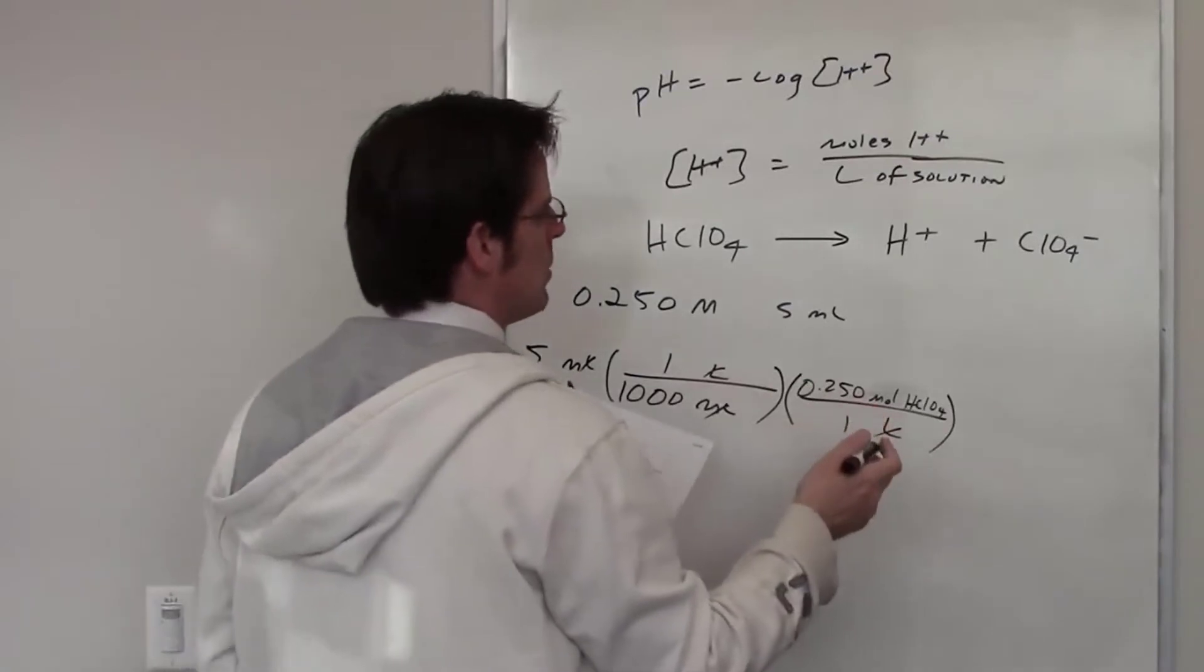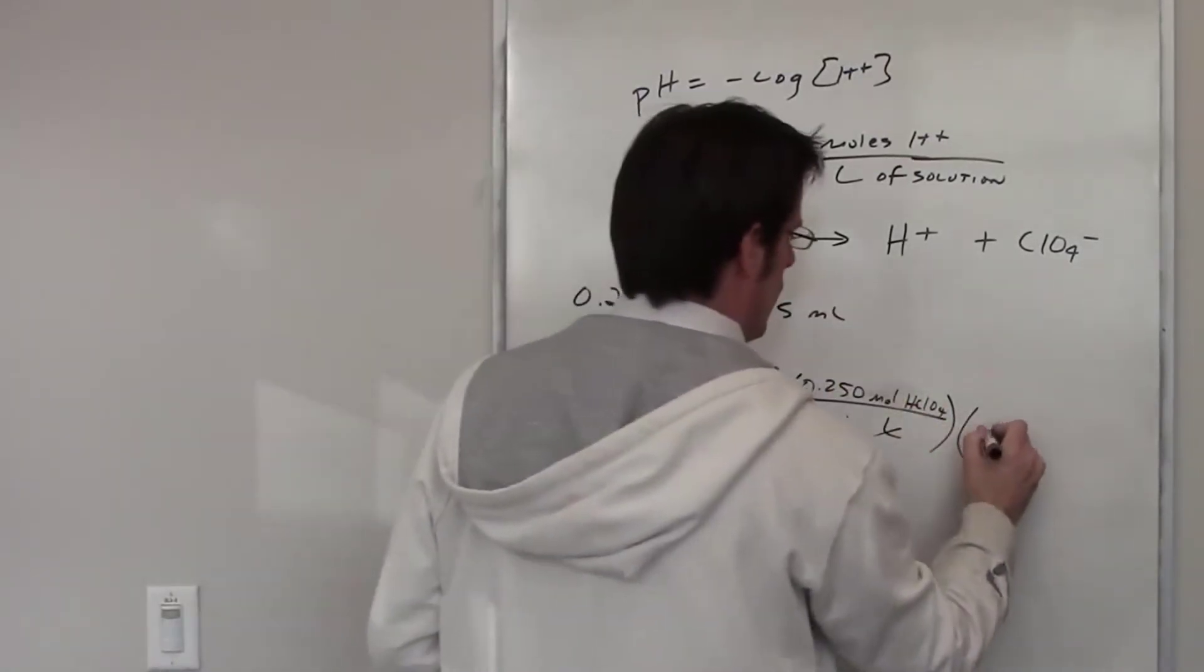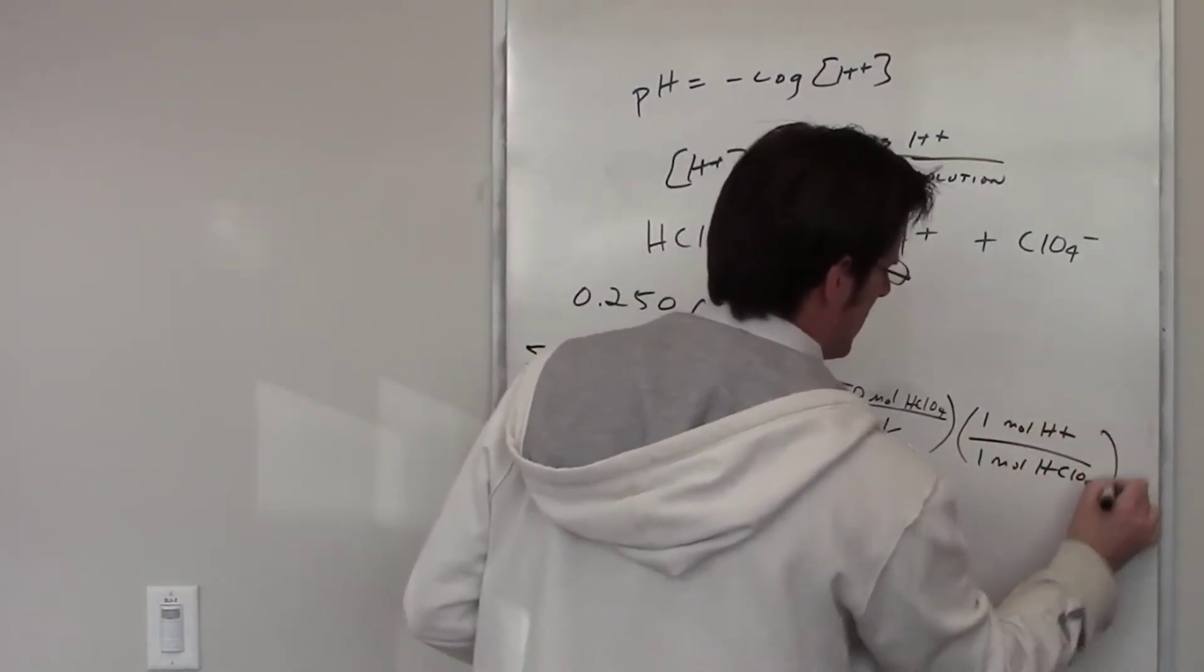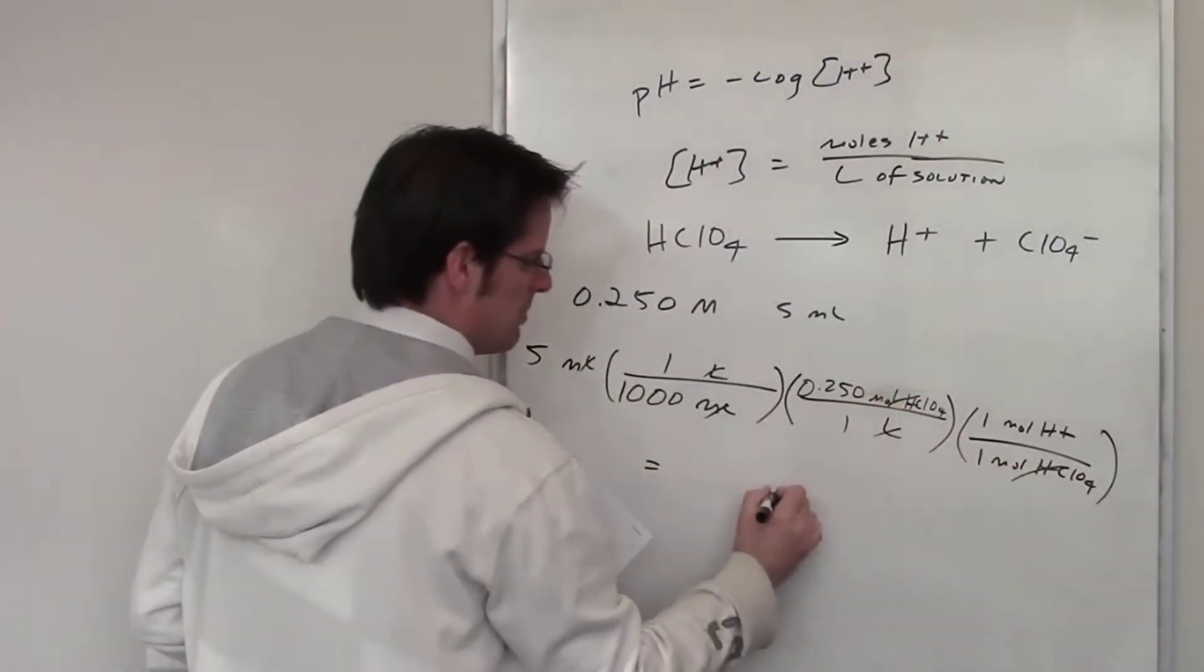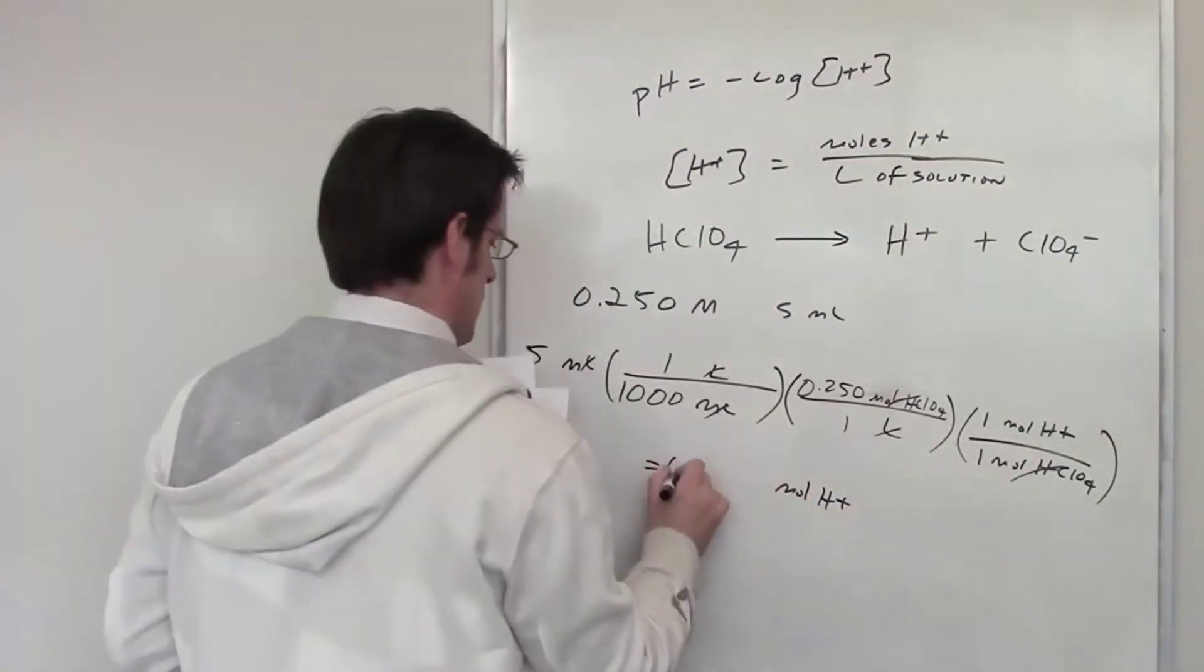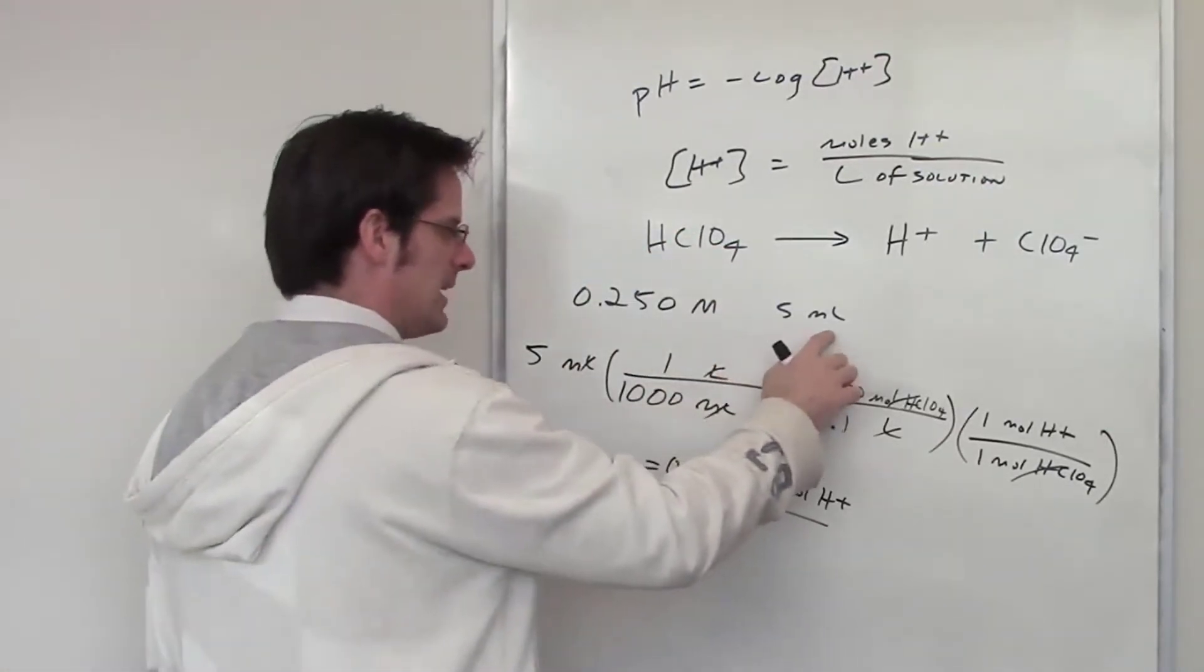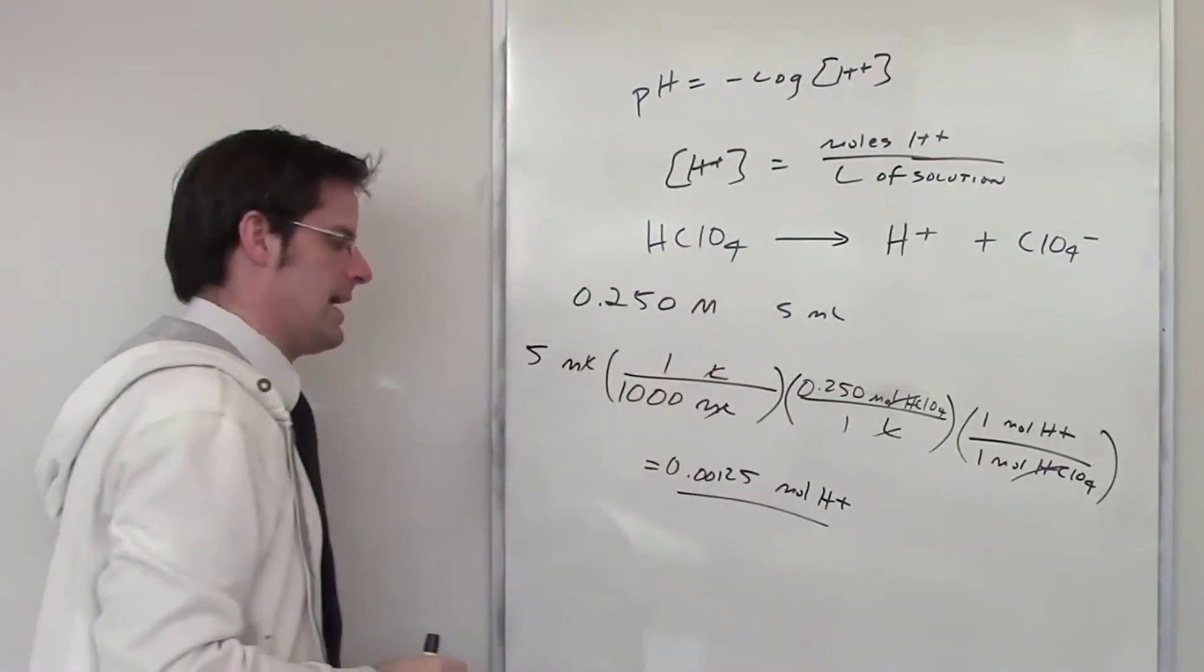How does that get me to moles of H+? Well, if you look at the stoichiometry of this reaction, there's one mole of H+ for every one mole of HClO4. Does that make sense? So moles of HClO4 cancel each other out, and that leaves me with moles of H+. When I throw that into my calculator, I end up getting .00125. So that's how many moles of H+ I have thrown into the solution when I threw 5 milliliters of .25 molar perchloric acid.